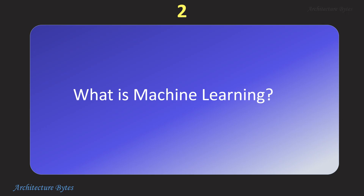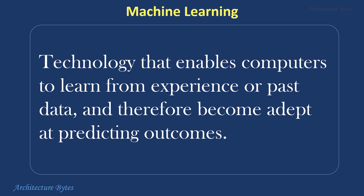What is machine learning? Machine learning is a technology that enables computers to learn from experience or past data and therefore become adept at predicting outcomes.